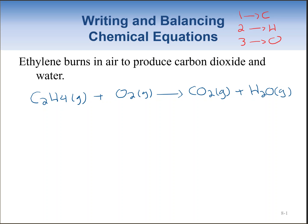First, we balance the number of carbons. In C₂H₄ we have two carbons, so we need two CO₂ on the product side. Then we balance hydrogens — C₂H₄ has four hydrogens, so we need two water molecules. Now for oxygen: we have four oxygens from the carbon dioxide and two from the water, a total of six oxygens, meaning we need 3O₂ on the reactant side.